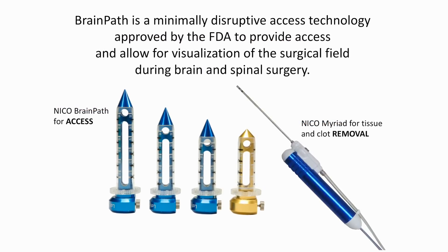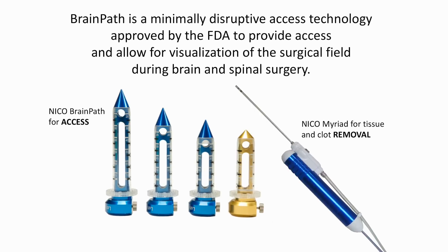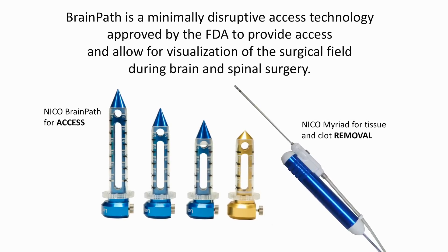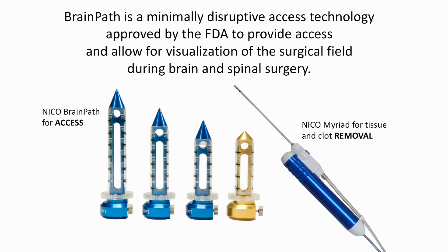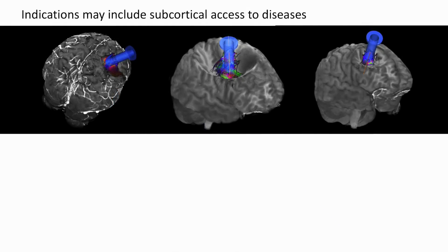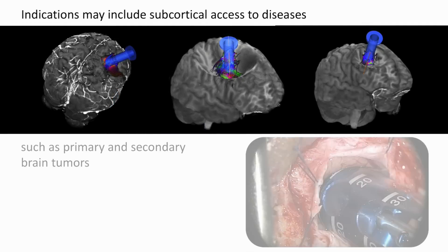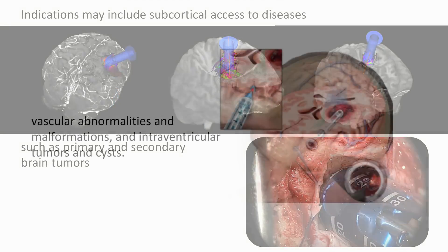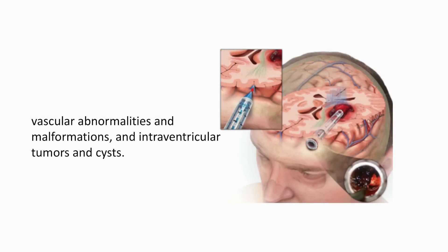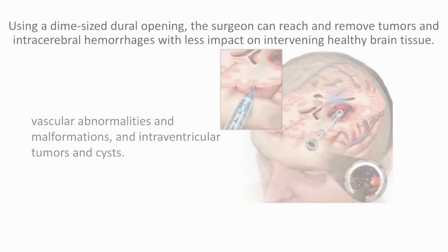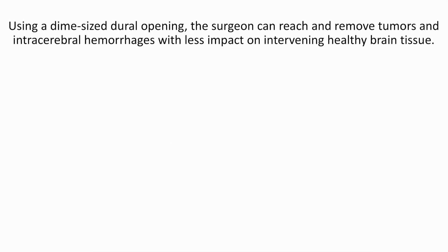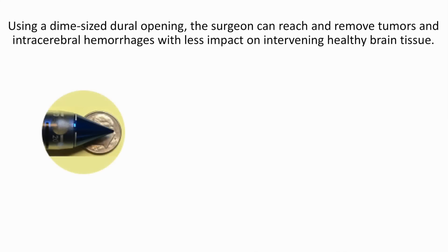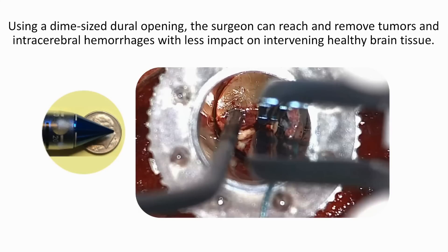BrainPath is a minimally disruptive access technology approved by the FDA to provide access and allow for visualization of the surgical field during brain and spinal surgery. Indications may include subcortical access to diseases such as primary and secondary brain tumors, vascular abnormalities and malformations, and intraventricular tumors and cysts. Using a dime-sized dural opening, the surgeon can reach and remove tumors and intracerebral hemorrhages with less impact on intervening healthy brain tissue.